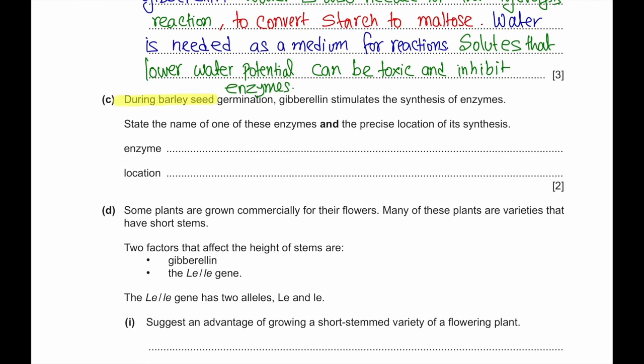Part C. During barley seed germination, gibberellin stimulates the synthesis of enzymes. State the name of one of these enzymes and the precise location of its synthesis. The enzyme is amylase and the location where it is synthesized is the aleurone layer.